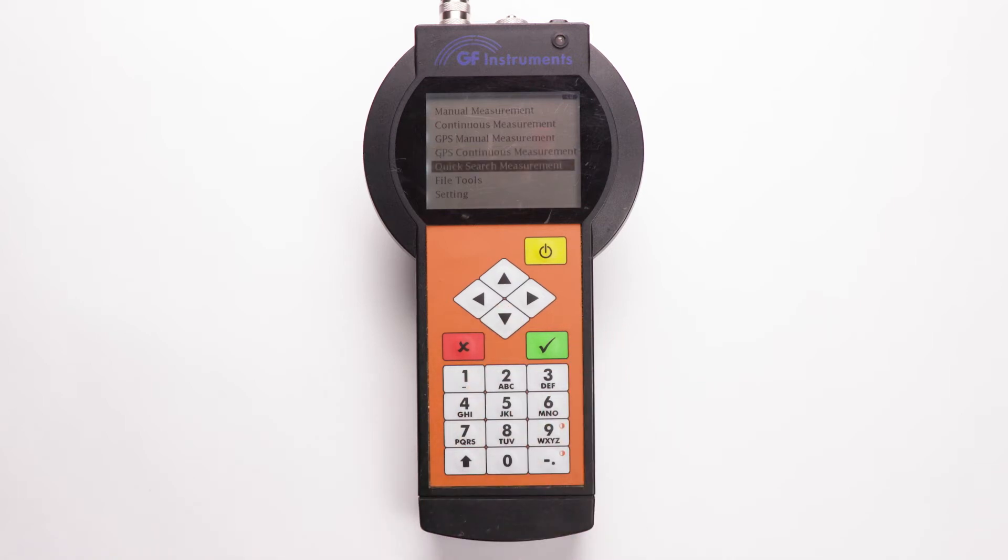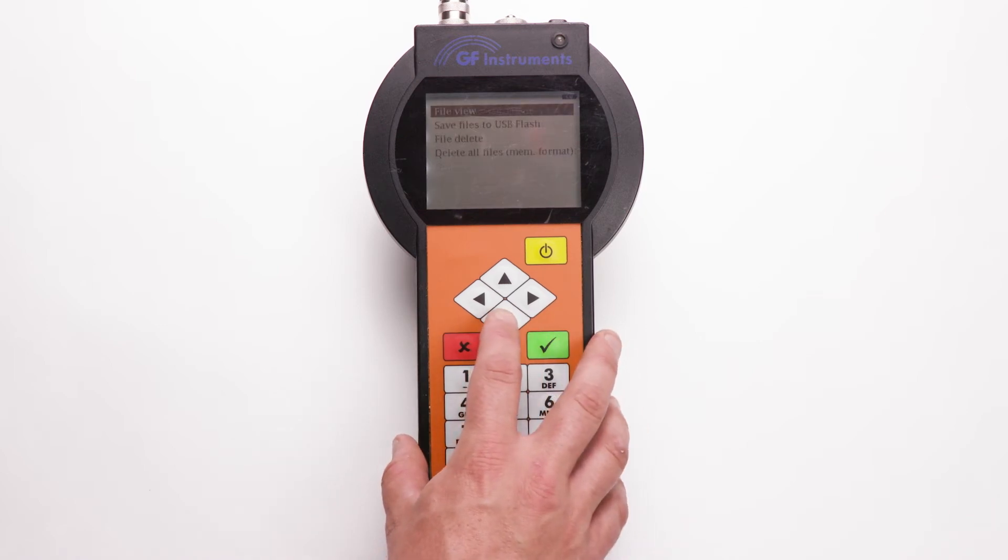Quick Search Measurement. Data are measured and continuously displayed. The data is not saved. This mode is usually used to perform troubleshooting. File Tools allows the user to view measured data and the general file management, such as deleting files from memory and saving measured files onto a USB flash disk.